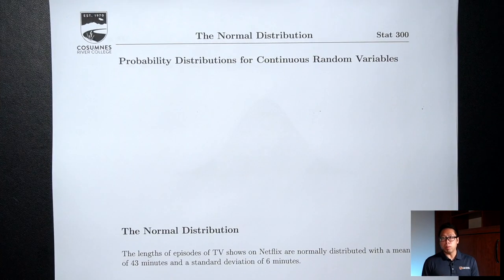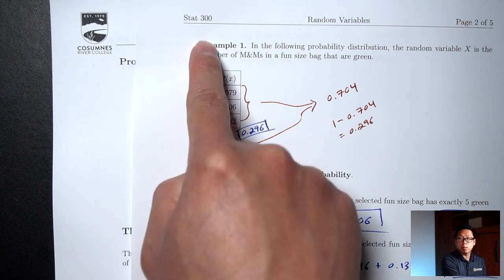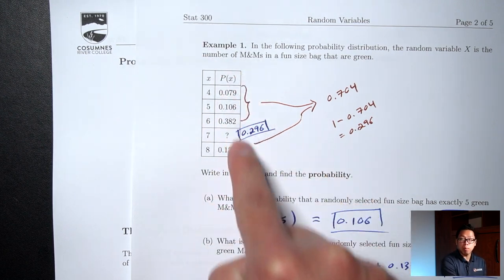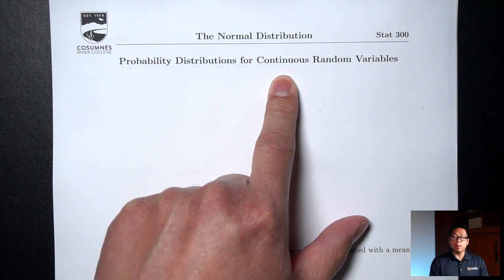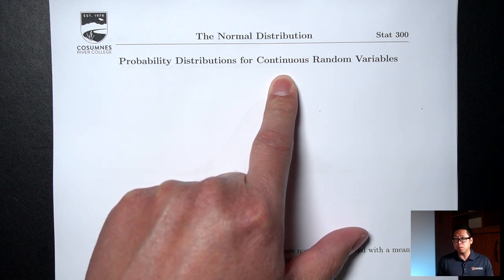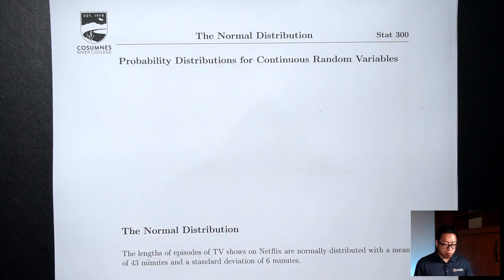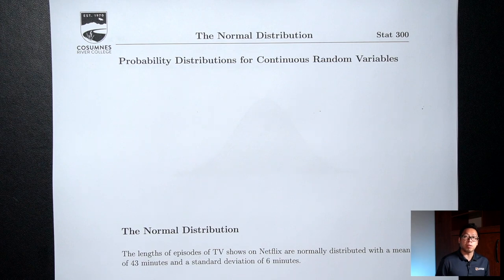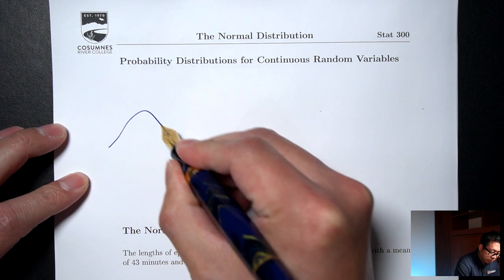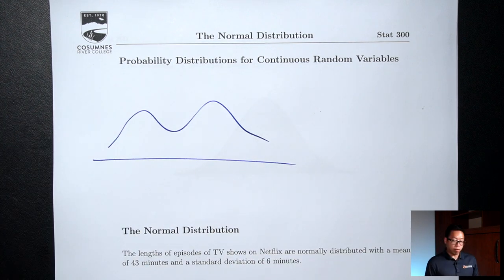When we talked about discrete random variables, a probability distribution was represented with tables, where we listed out all the possible values of x along with their probabilities. Now for a continuous random variable, because possible values can be any decimal, it's impossible to list out all the decimals — there's just too many. So instead of representing probability distributions with tables, for continuous random variables the probability distributions are going to be represented with curves. This curve is called a probability density curve.